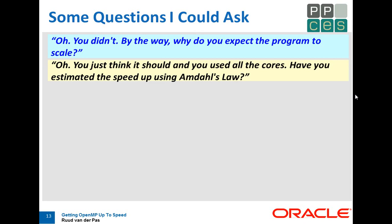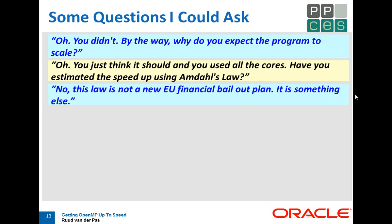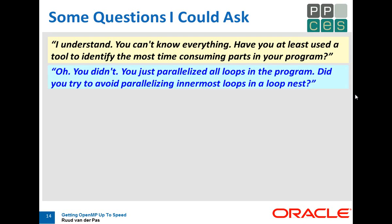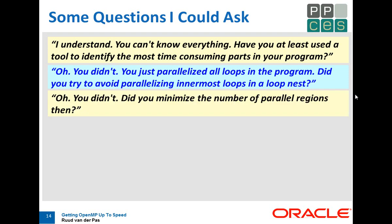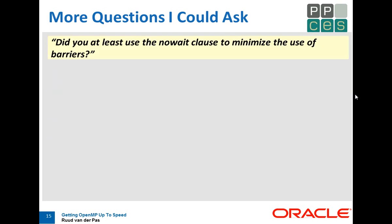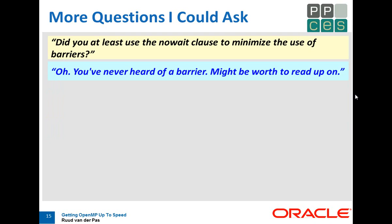You used all the cores. Did you use Amdahl's law? No, that's not a new EU bailout program — that's something else. Have you at least used a tool to find out where you're spending most of your time? You didn't. You just parallelized all the loops in your program. Did you try to avoid parallelizing the innermost loops? Did you minimize the number of parallel regions? Did you use the no-wait clause to minimize the use of barriers? Because barriers are expensive. Oh, you never heard of a barrier. Maybe you should read a little bit.